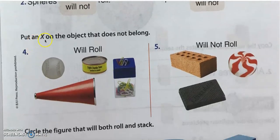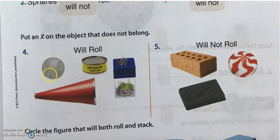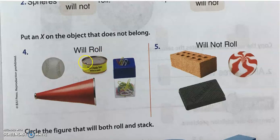Number four: let's put an X on the object that does not belong. 'Will roll' means the shape of a sphere — what will roll? Baseball — yes. Anything else? The canned tuna — it has curved surfaces so it will roll.